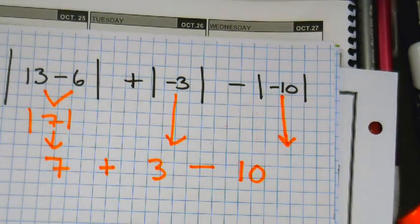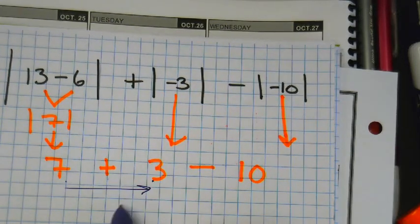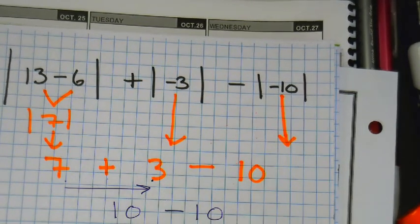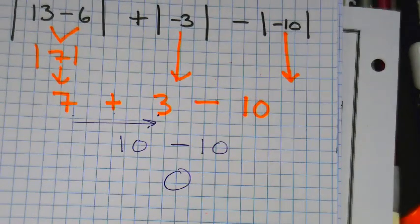Alright, now we're going to first add these two. 7 plus 3. 10. 10 minus 10. It is 0.